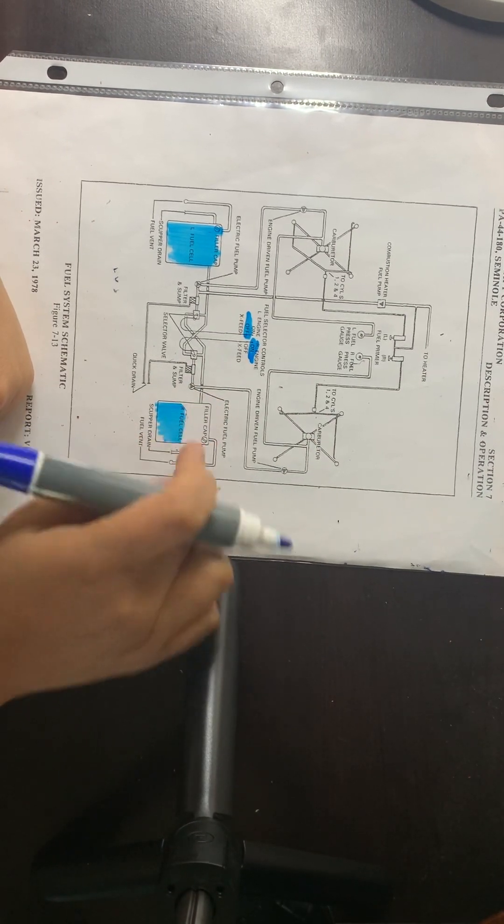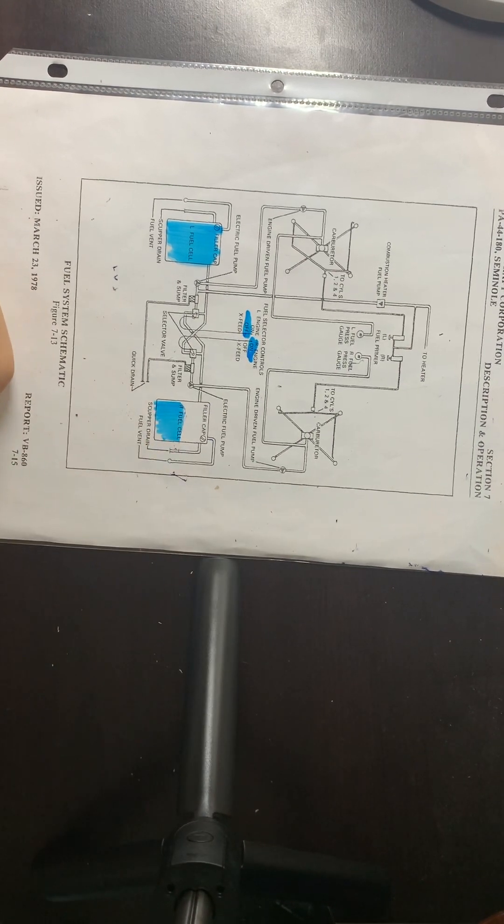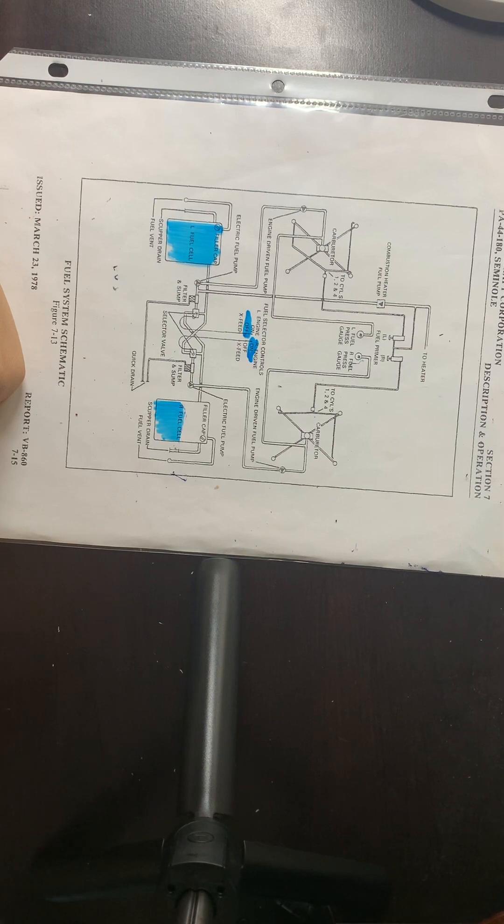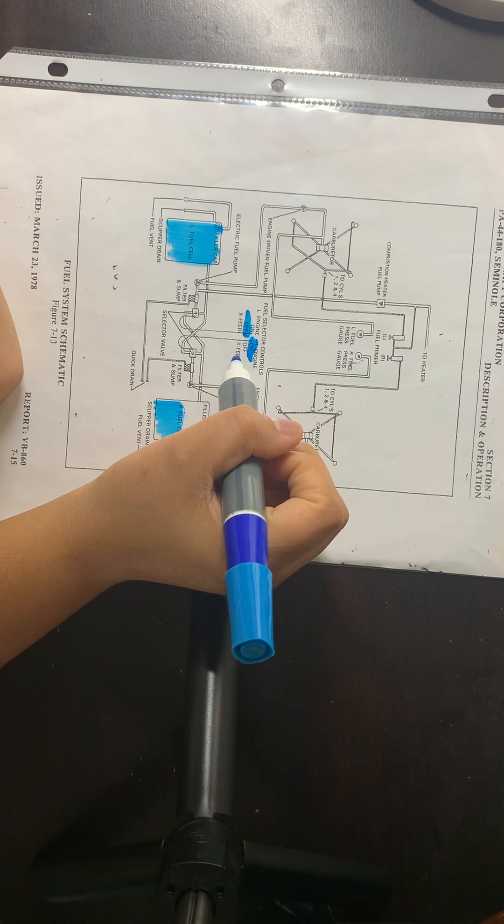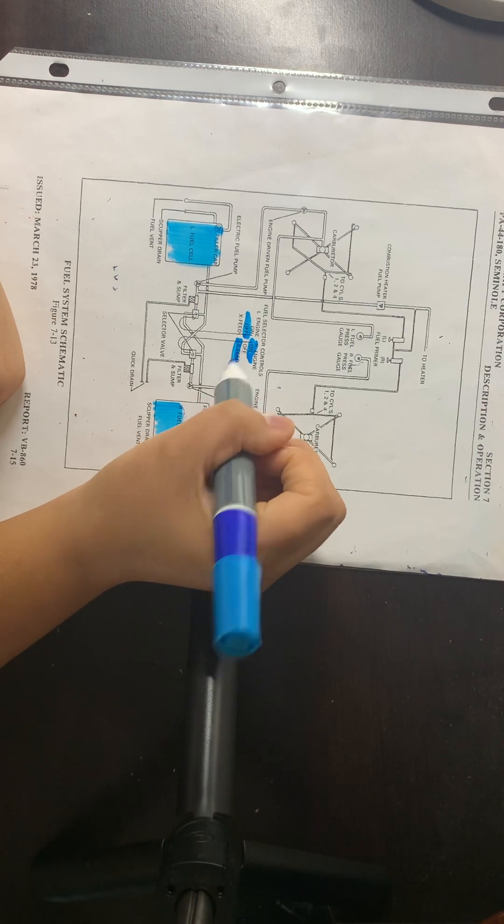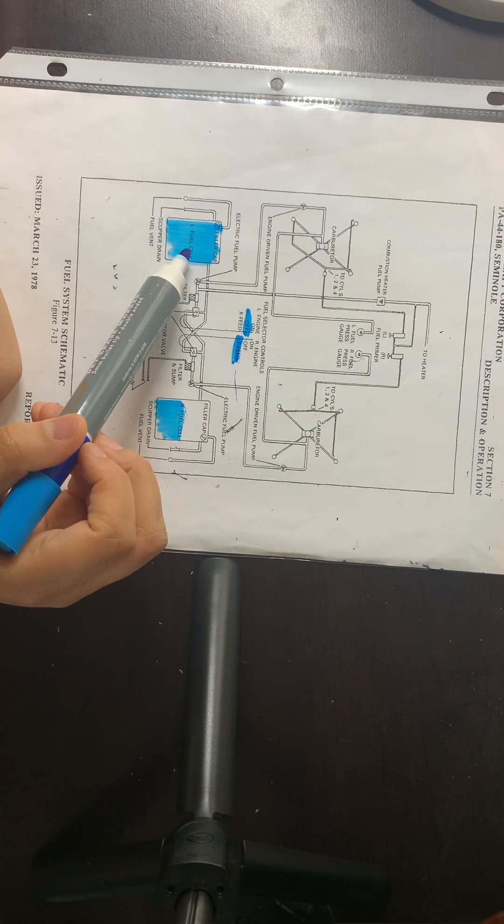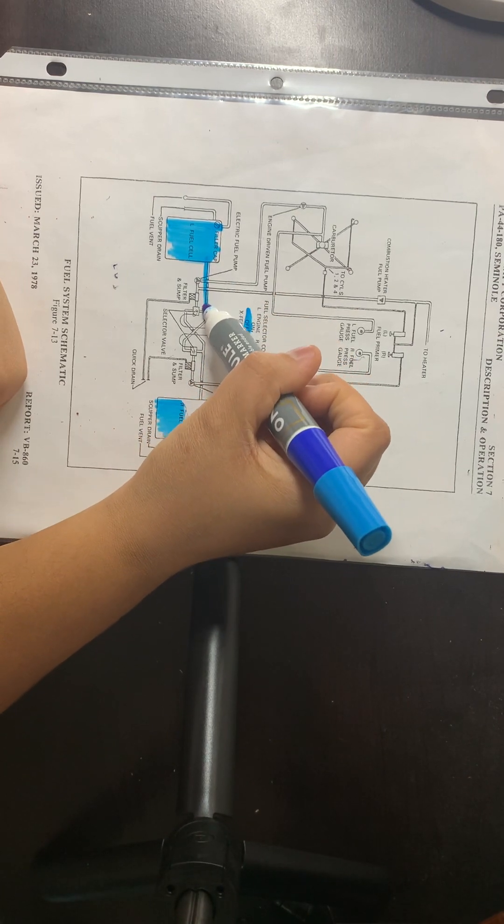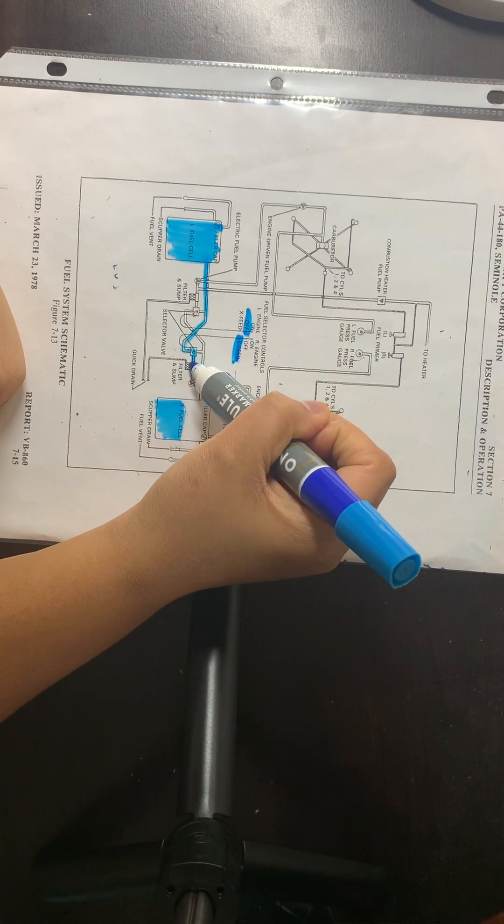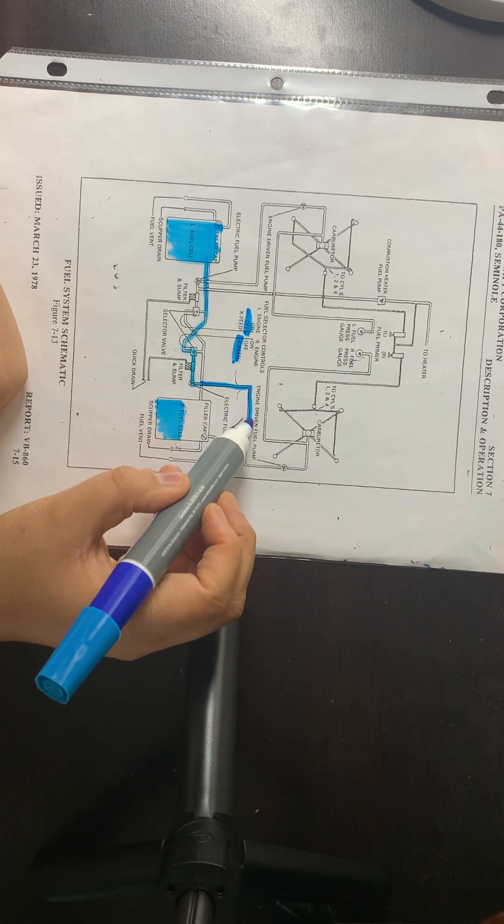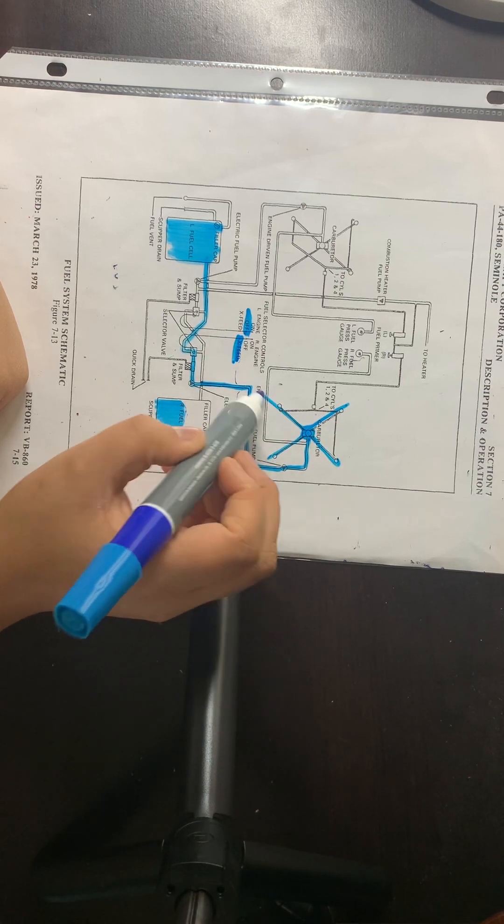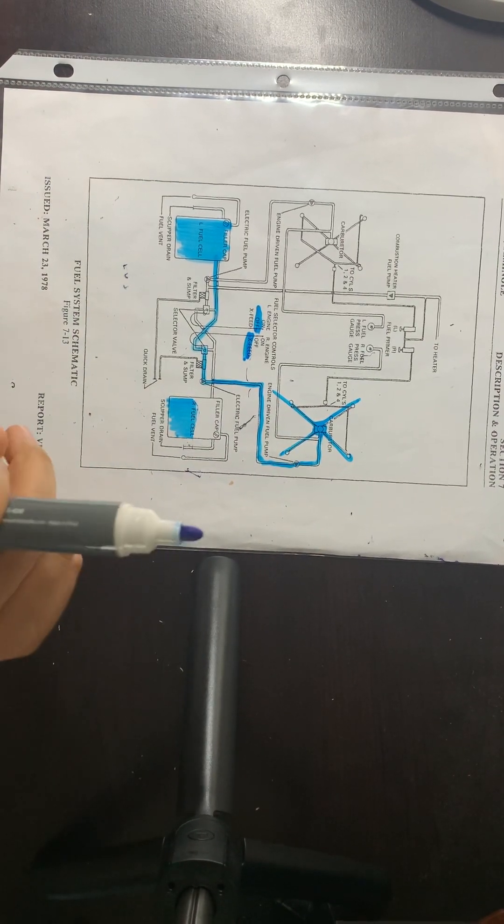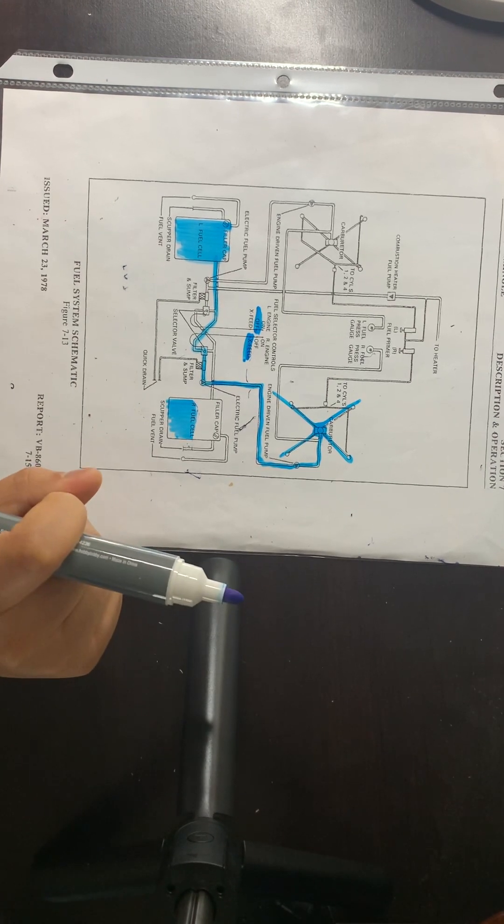This is what you're going to do: you're going to take your right tank—because our left tank is off—and you're going to push this to crossfeed. So what that's doing is it's taking fuel from the left cell and it's going into the carburetor and into the cylinders. You only use this in an emergency. You never use this on normal flight, only if you have an engine failure.